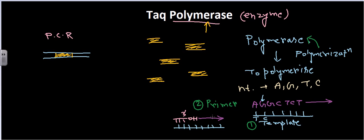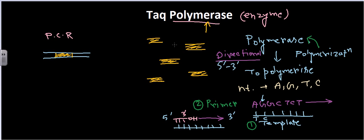Another important term is directionality. Directional synthesis is very important. DNA polymerase synthesizes from the 5' to 3' direction — this is the 5' end and this is the 3' end — so it synthesizes from 5' to 3'. These are the basic features of polymerase enzymes.